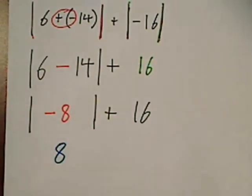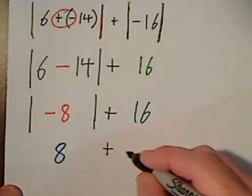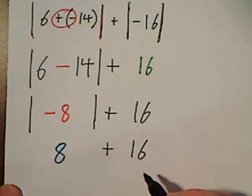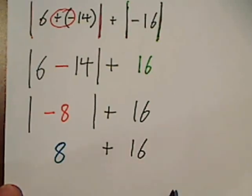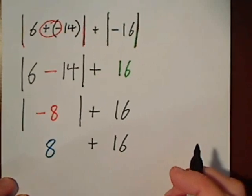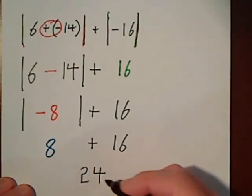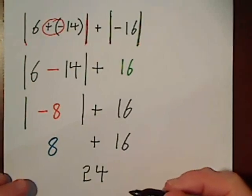Bring down what we haven't used, and then 8 and 16, your last step is to simply combine those. Let me zoom out just a little bit, and you'll get 24 as the result.